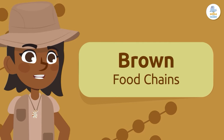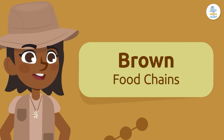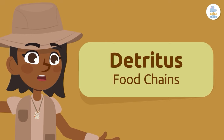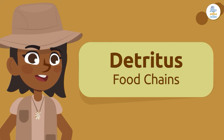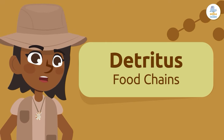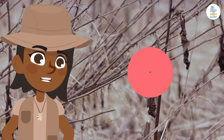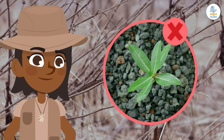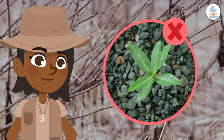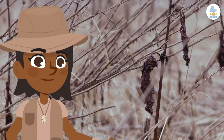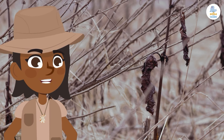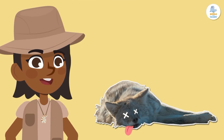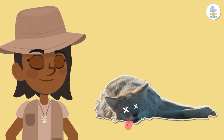Brown food chains. On the other hand, brown food chains, also called detritus food chains, don't start with living plants. They start with — you guessed it — dead stuff! Yikes! How is this possible?